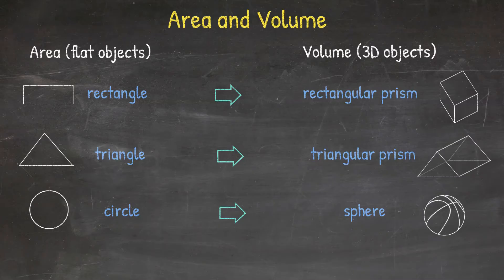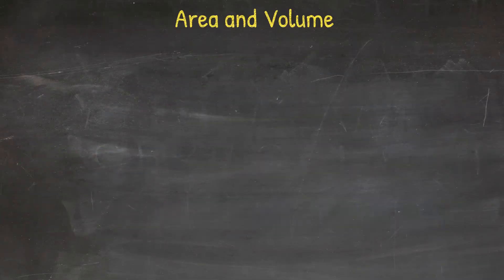While volume is often associated with three-dimensional objects, we may also be asked to calculate the surface area of these three-dimensional objects. Now let's discuss the area and volume for triangle and triangular prism.